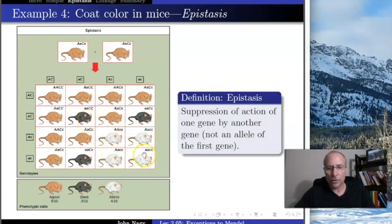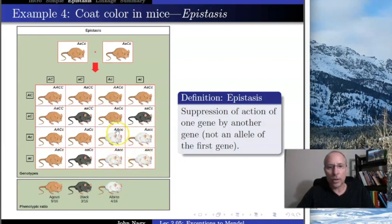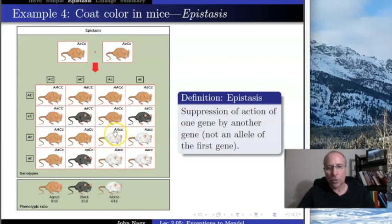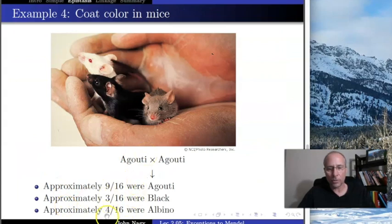But look at these four individuals — they're all little c little c. So it doesn't matter what the A gene is doing; no matter what, they can't make melanin. In this case, big A is neither dominant nor recessive, and little a is neither dominant nor recessive, because they can't even work. So all four of those are albino. Counting them up: nine are agouti, three black, four albino — precisely what the original data showed.